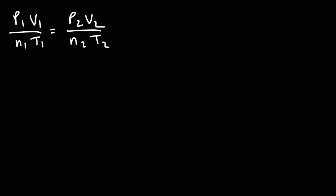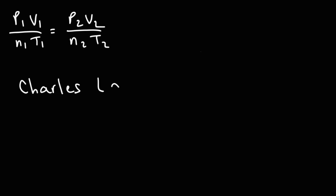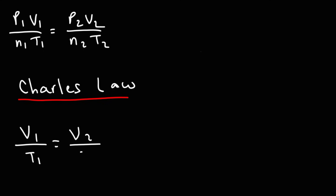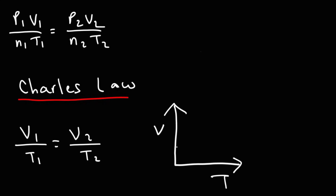For Charles' law, we hold the pressure and moles constant, giving us V1 over T1 equals V2 over T2. This law describes the direct relationship between the volume of a gas and its temperature — as you increase the temperature, the volume of the gas increases and expands.